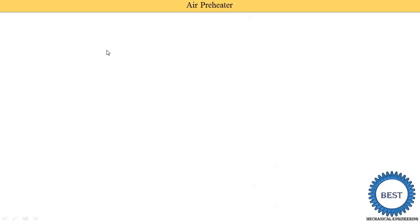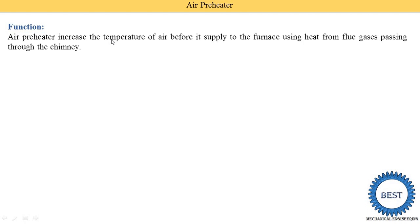An air preheater is a type of boiler accessory installed with the boiler. In boilers, we supply air, water, and fuel. As the name suggests, in an air preheater we heat the air before supplying it to the furnace. The function of the air preheater is to increase the temperature of air before it is supplied to the furnace. We heat this air by using the heat from flue gases passing through the chimney — the fuel combustion produces gases whose heat energy is first supplied to the water, and then exhausted to the atmosphere.